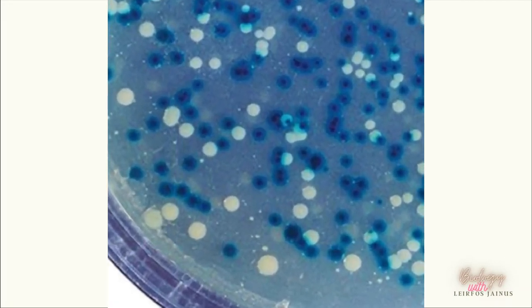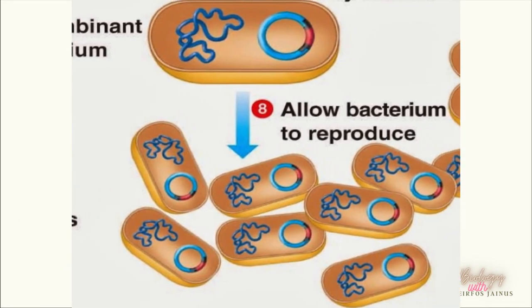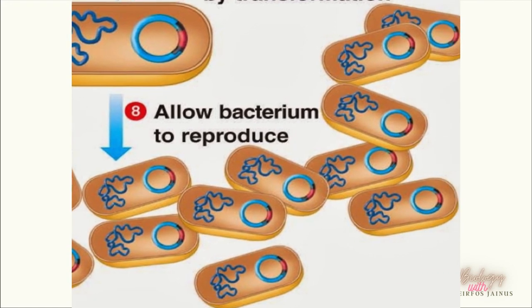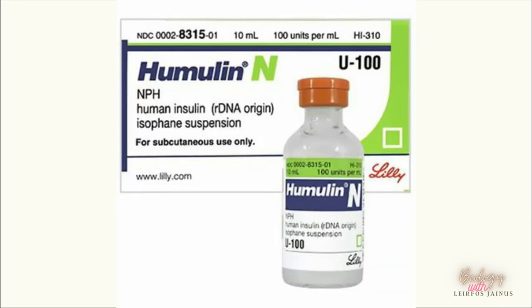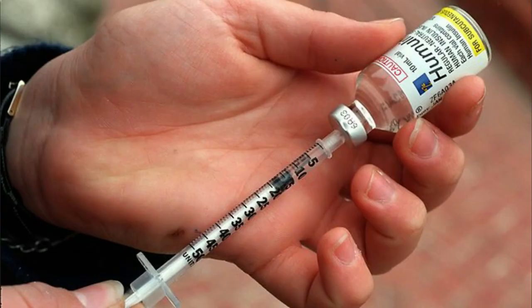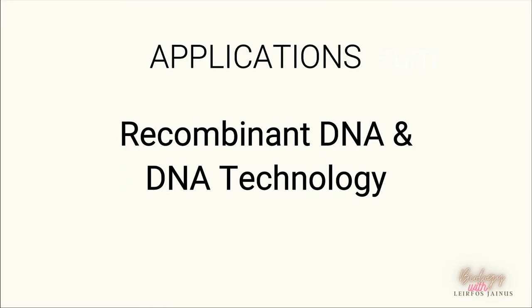The bacteria from the white colonies are then allowed to reproduce and express the target gene during fermentation to produce insulin polypeptide. The cDNA is expressed during fermentation and the bacteria produce insulin polypeptide in rapid production. The polypeptides are then isolated and purified to form functional insulin that is safe for humans. The insulin produced through this process is similar to human insulin, has no adverse reactions, can be produced in large amounts, is cheaper compared to conventional methods, and is halal from the Muslim perspective.